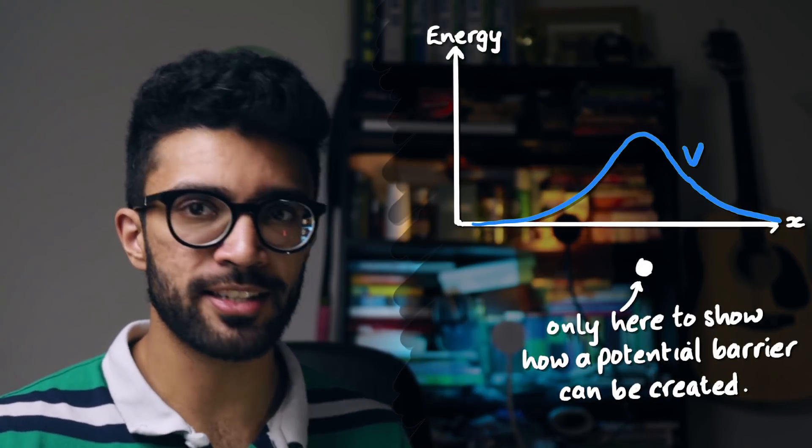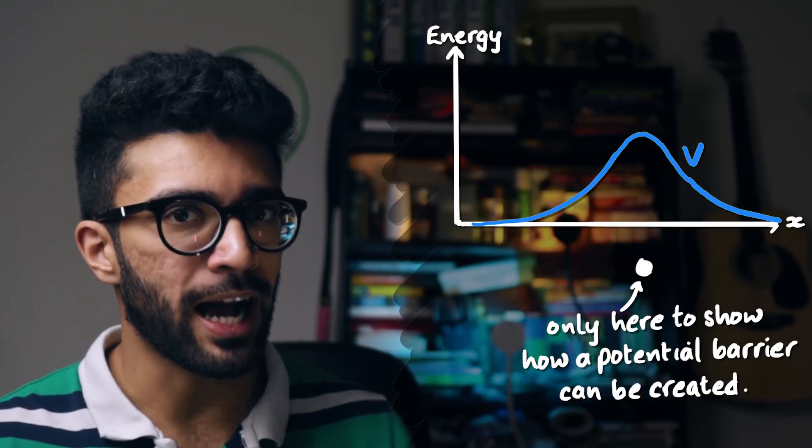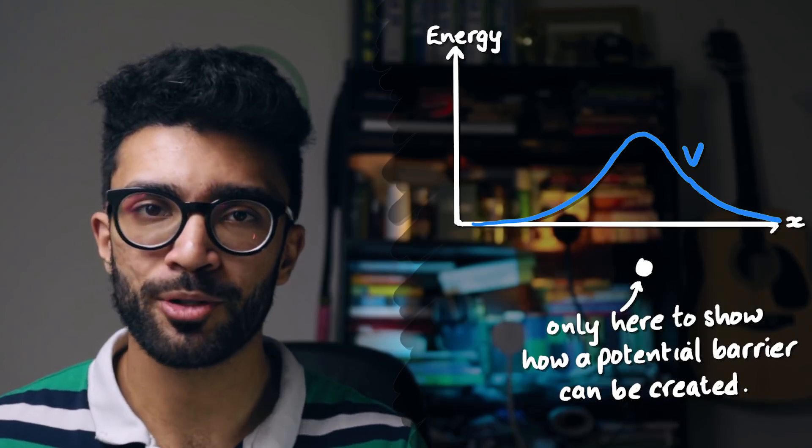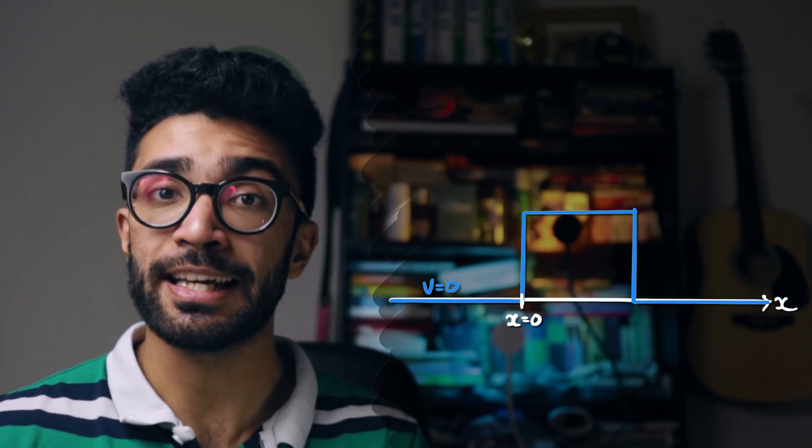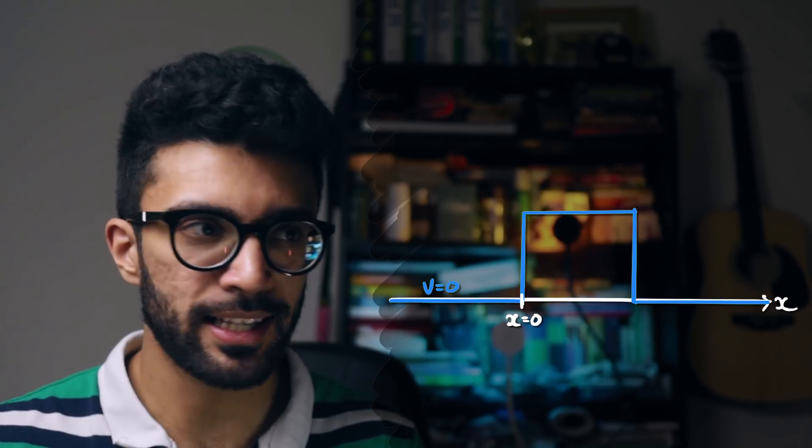The whole point of actually bringing this second electron into the picture was to show you how a potential barrier may be created — in this example, we utilized the mutual repulsion of like-charged particles. But to make things even simpler and to start thinking about quantum tunneling, let's abstract things a little bit more. Let's stop worrying about how we would create a potential barrier, and instead imagine that we can create a potential barrier that looks exactly like a step. We're calling this potential V. The potential at any x position less than x equals zero is zero, but between x equals zero and x equals a — where a is some value — the potential suddenly increases to a value u, a constant.